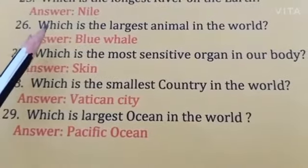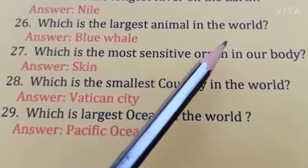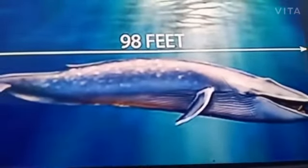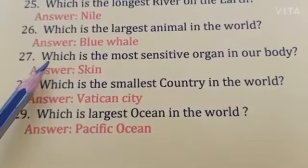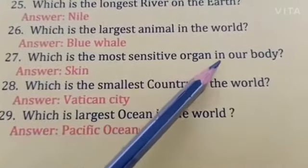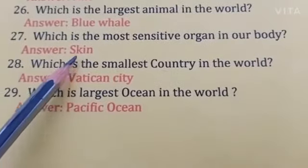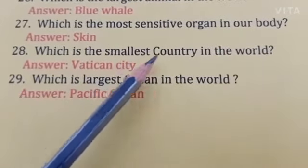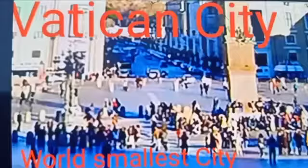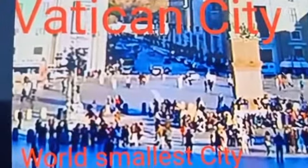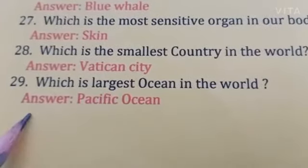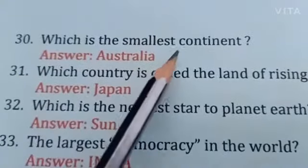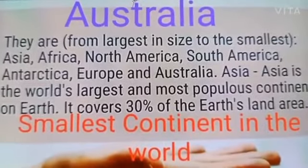Number 26: Which is the largest animal in the world? Answer: Blue Whale. It is 98 feet long and 73 tons. Question 27: Which is the most sensitive organ in our body? Answer: Skin. Number 28: Which is the smallest country in the world? Answer: Vatican City. It is a very small country but very beautiful. The largest ocean in the world? Answer: Pacific Ocean. Which is the smallest continent? Answer: Australia.